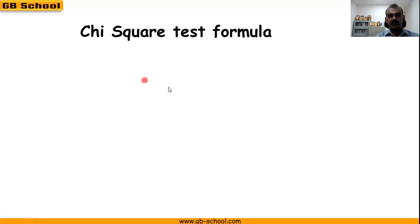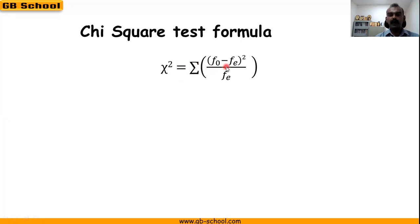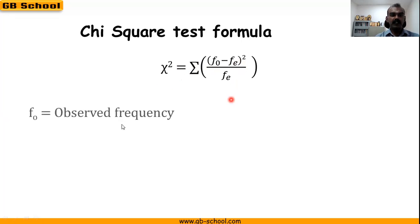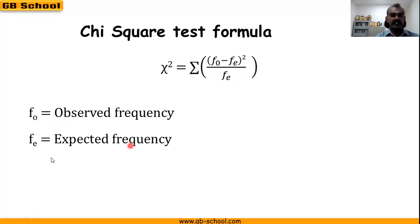What's the formula for chi-square test? The symbol chi-square is equal to the sum of (fo minus fe) squared, divided by fe. Here, fo is the observed frequency, whereas fe is the expected frequency.